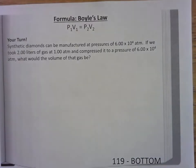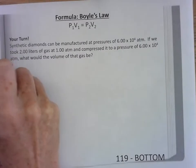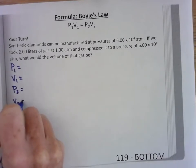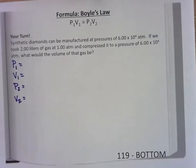So we know we're using Boyle's law here. P1V1, P2V2. I'm always going to write my variables because I don't have to deal with the words as much.